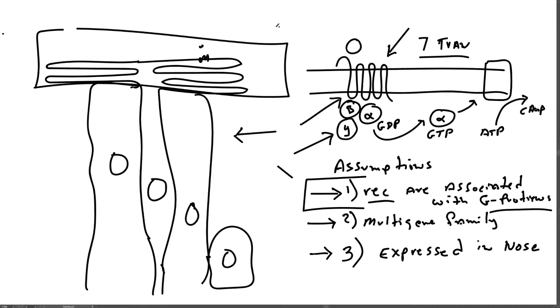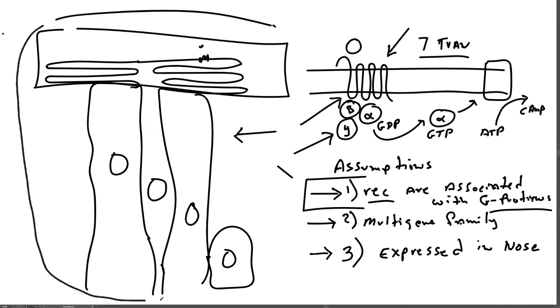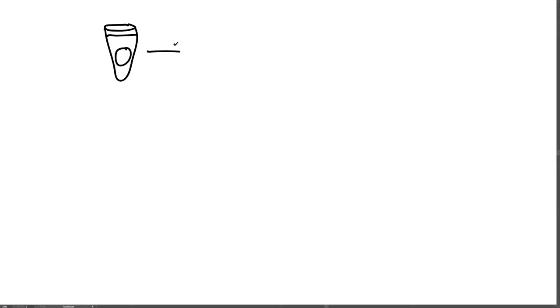First, they dissect out a piece of olfactory tissue from the nose — they're using rats in this study. Once they have the tissue, they biochemically purify RNAs, specifically messenger RNAs, from the tissue. You can get the RNAs to bind to a matrix and purify the messenger RNA.